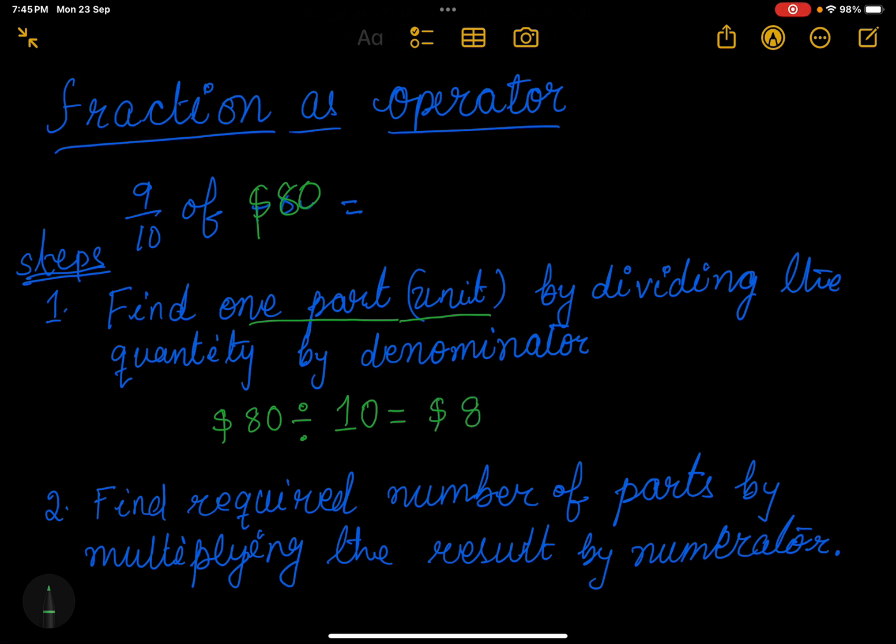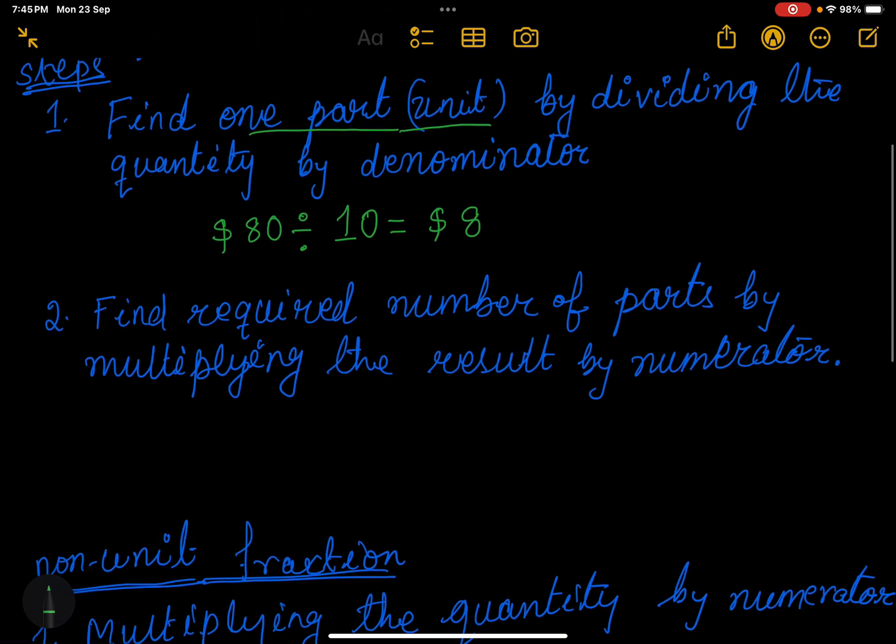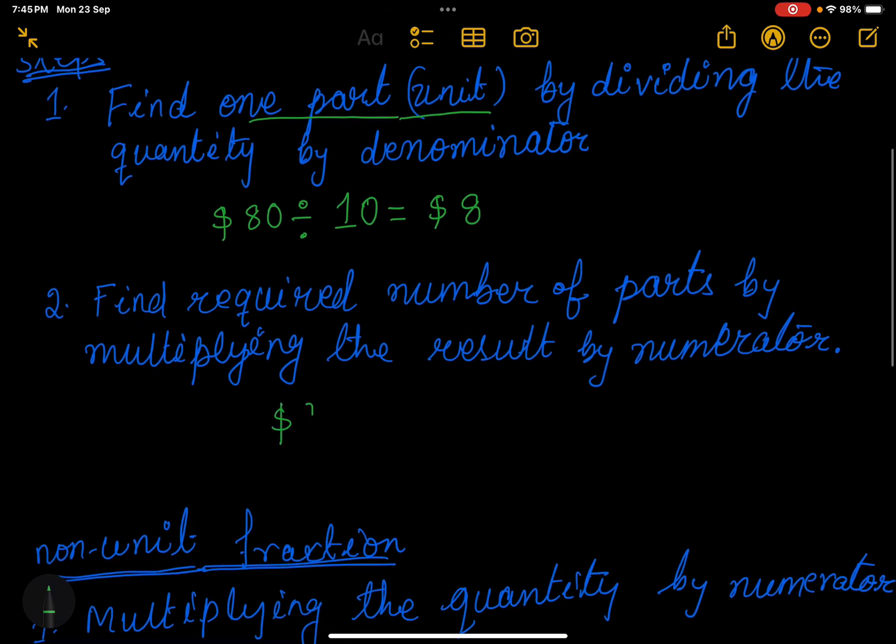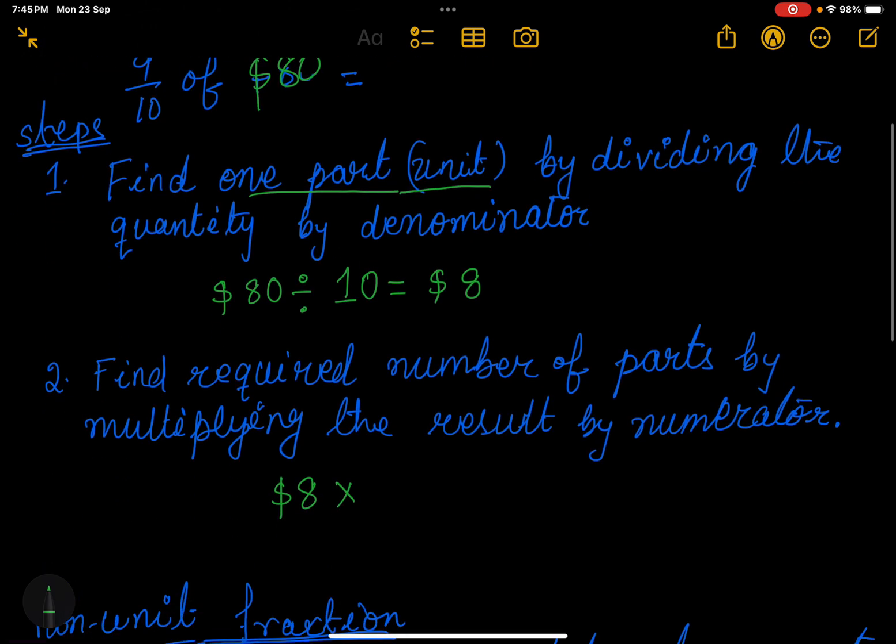$8. So one unit is equal to $8. The next step is to find the required number of parts by multiplying the result by the numerator. We got the result $8. What is the numerator? Numerator is 9. So we'll multiply by 9, so my answer is $72.